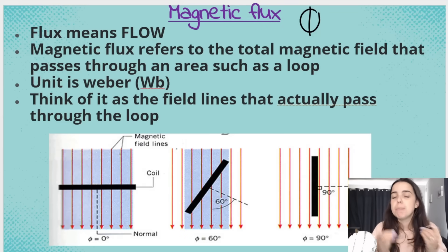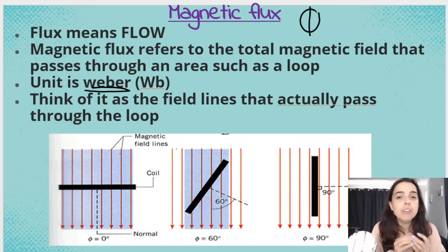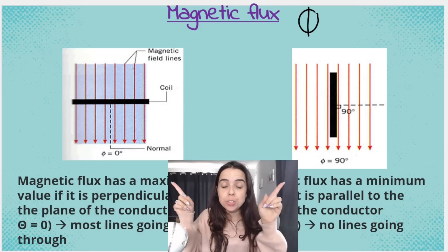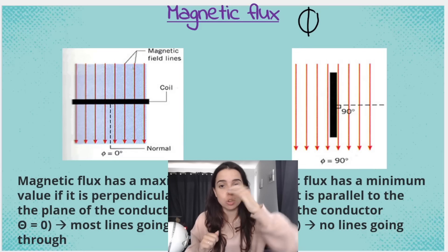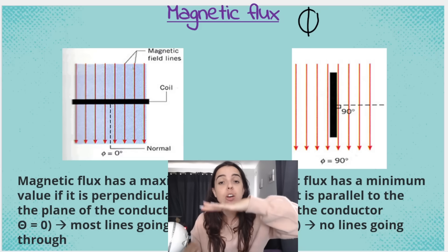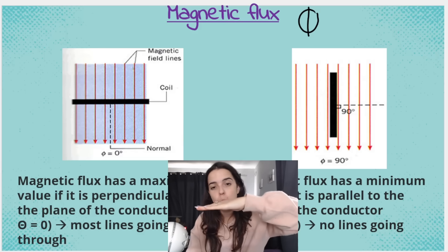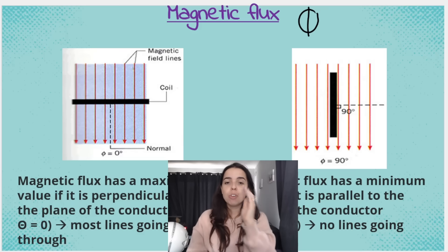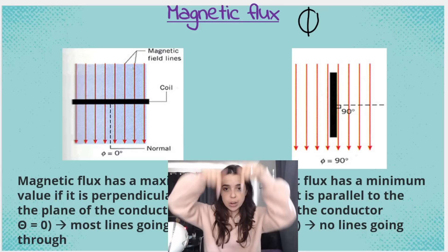The unit for magnetic flux is the Weber (Wb). Think of it as the field lines that actually pass through the loop. Now consider two scenarios: the black rectangle represents the coil or conductor. In the left picture the conductor is lying flat; in the right picture the conductor is tilted. The magnetic field lines are going from top to bottom — look at the arrows.